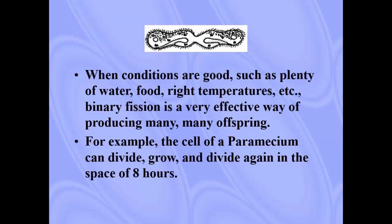When conditions are good — there's a lot of food, a lot of water, the temperature is right — binary fission is very effective for producing many, many offspring. For paramecium, it can divide, grow, and divide again in the space of eight hours. So starting with one paramecium, it divides and grows to two, then those two divide and grow to four. In eight hours you'll have four paramecium. Compare that to nine months with every human — it's a really, really effective way of producing many, many offspring.